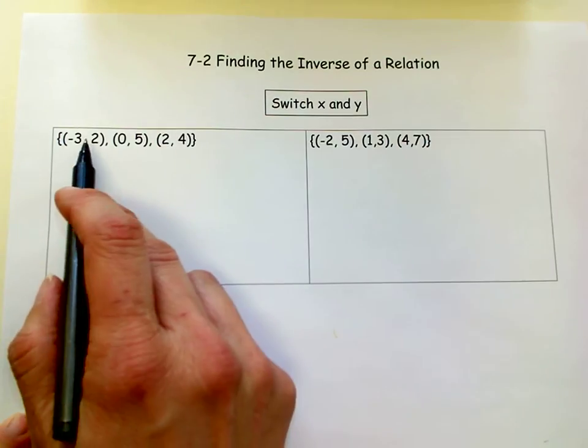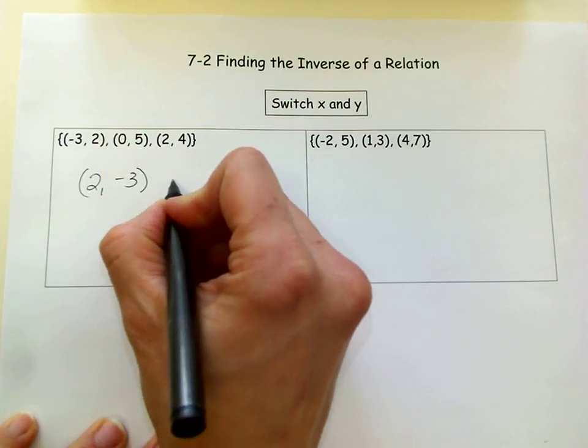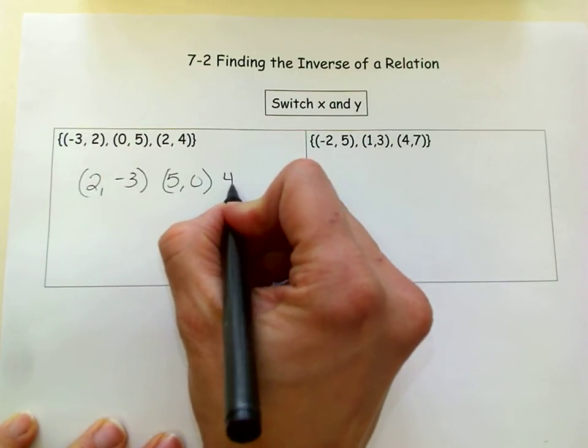So to find the inverse of this, we simply switch the x and the y. 2, negative 3, 5, 0, and 4, 2.